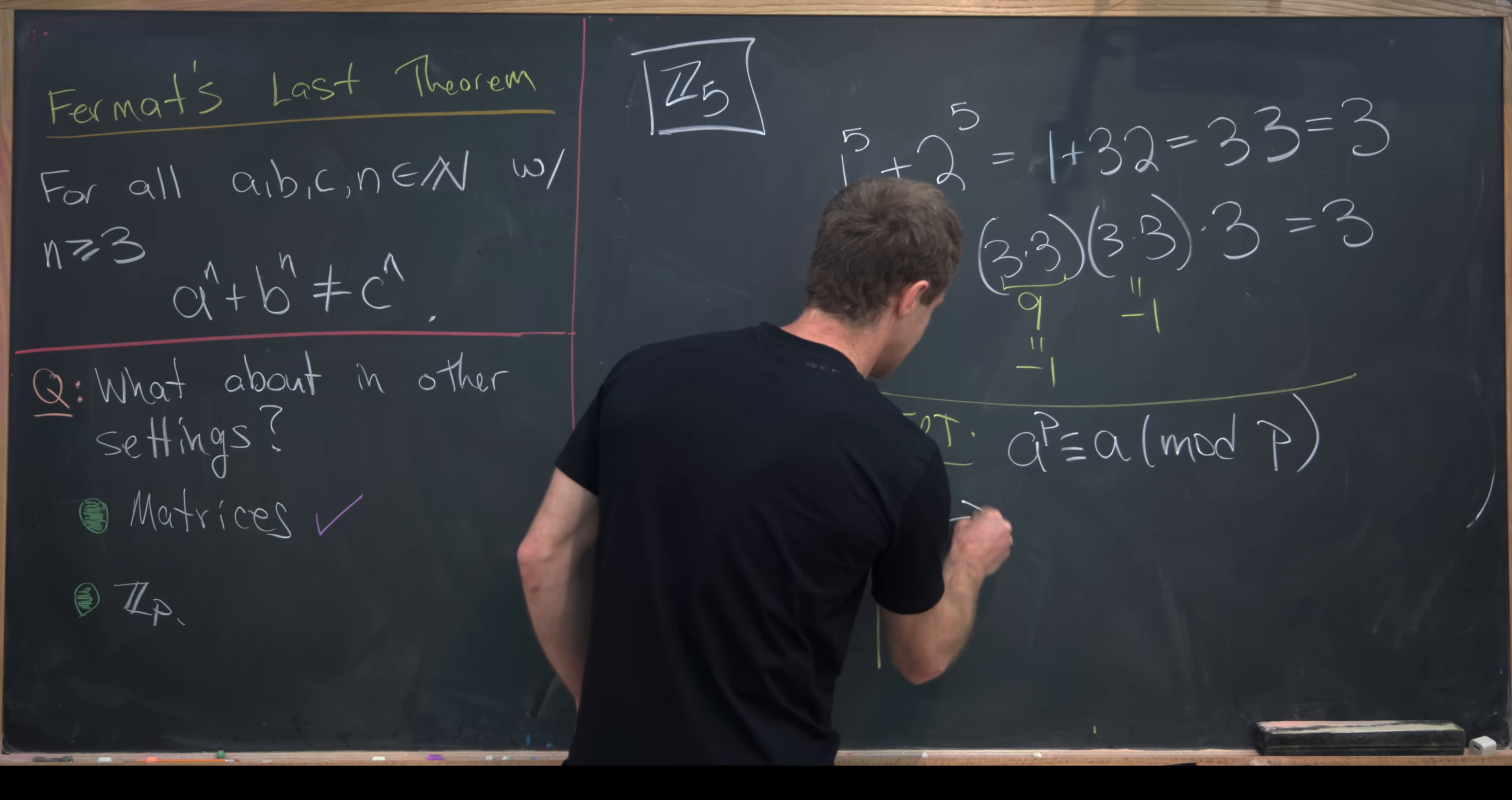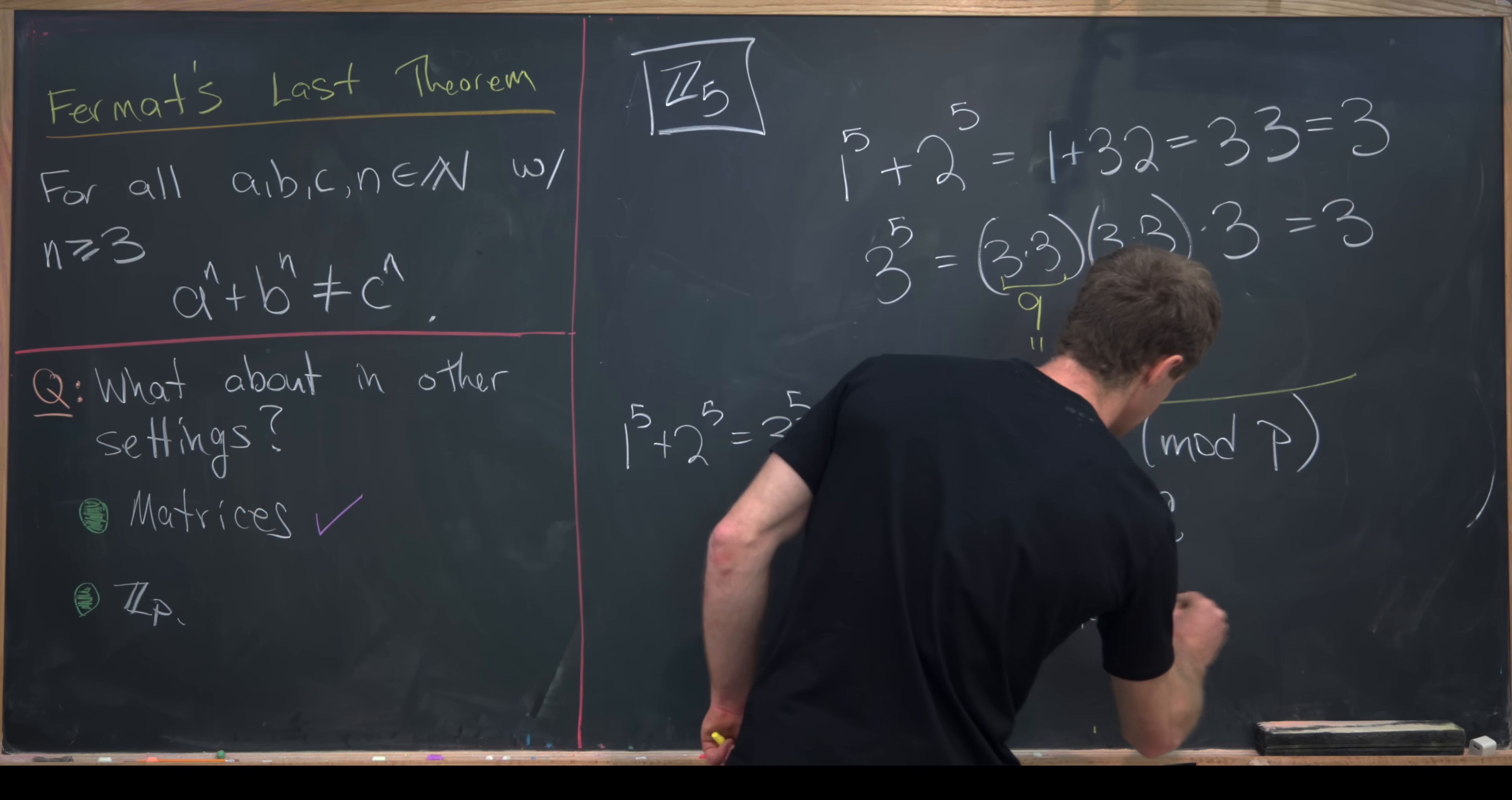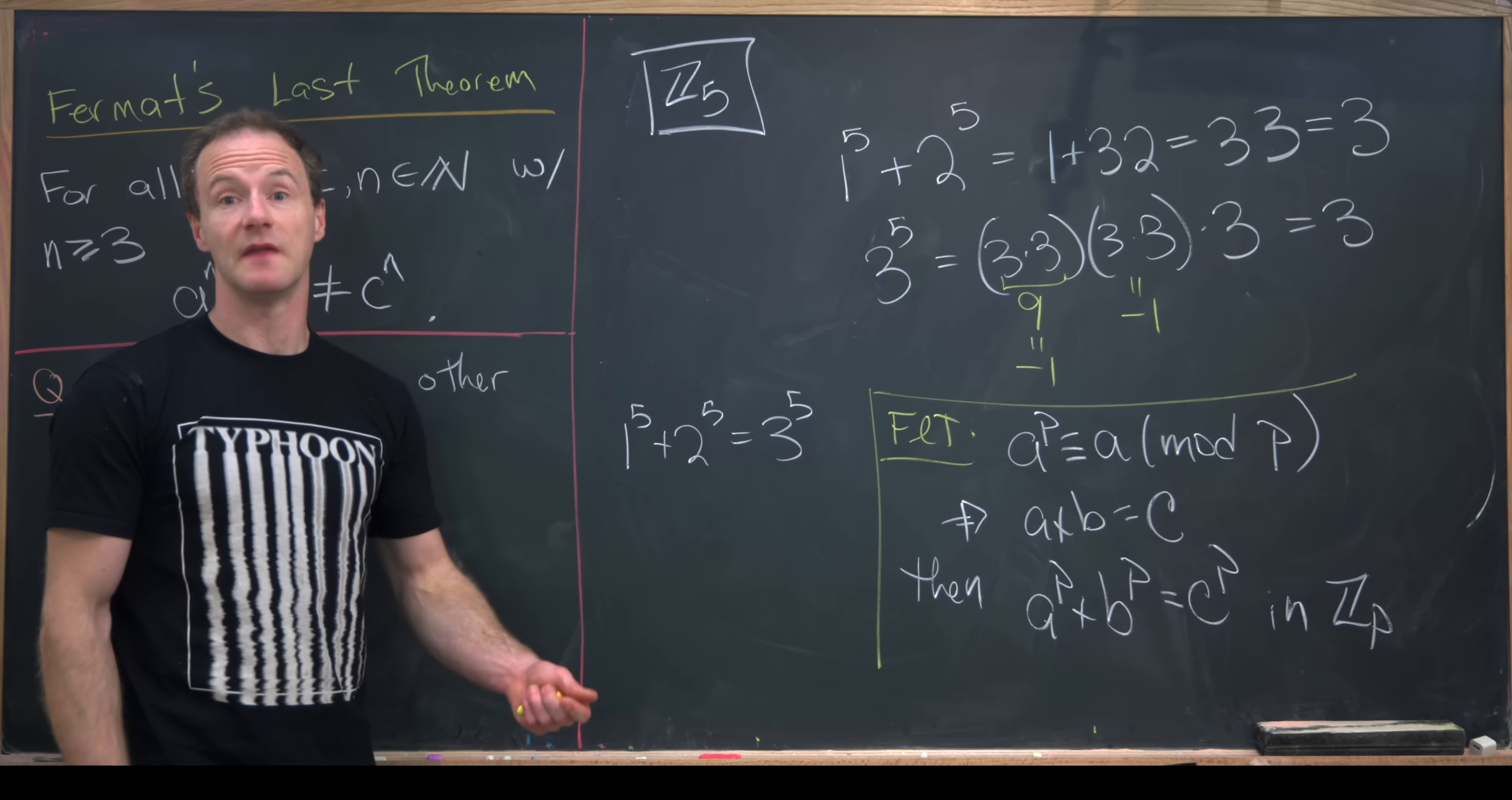But what that tells us is that if A plus B equals C, and that's just happening in normal integers, then A to the P plus B to the P is equal to C to the P in ZP. In other words, modulo P. And so this is maybe not as surprising as it originally seemed. And that's a good place to stop.